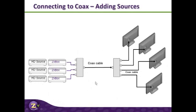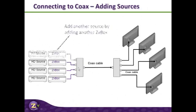Let's add another source. We had three units running into this four-way splitter. We're simply going to add another ZV box with its source, assign it a channel, and these TVs will now receive that channel. Very simple.